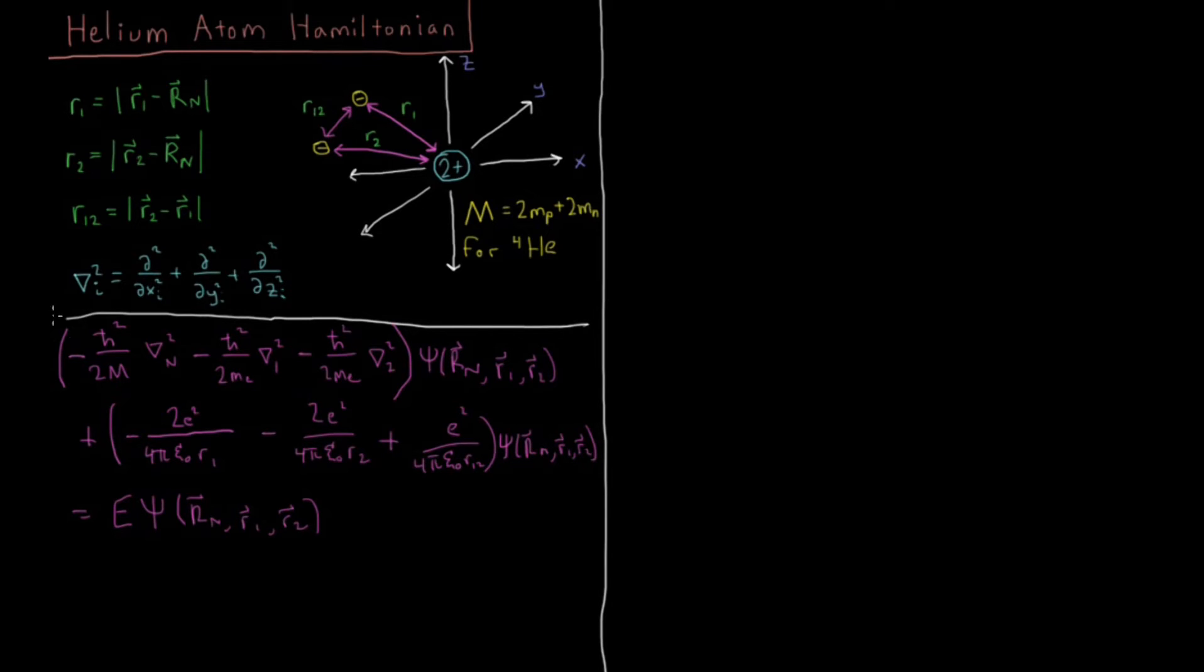Let's make one assumption here. We can see that the mass of the nucleus is much greater than the mass of the electrons. So we can assume that relative to the electrons, it's a pretty good approximation that the kinetic energy of the nucleus, Tn, that operator, is going to be approximately zero. So we're just going to set that operator equal to zero and not worry about the kinetic energy of the nucleus.